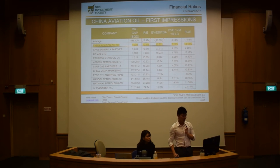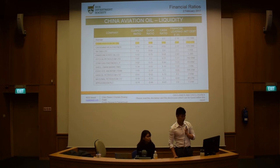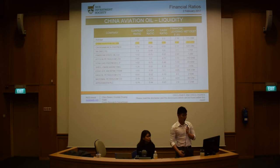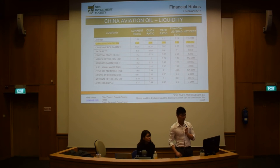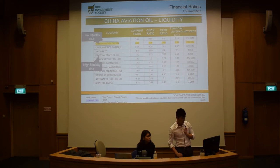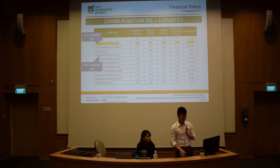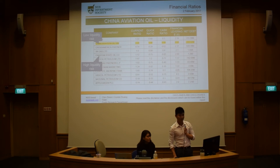Let's say you look at PE and EV/EBITDA and think this looks undervalued. The next step is to look at liquidity — current ratios and quick ratios. Looking at China Aviation Oil versus the average, it's quite safe. Its current ratio is above one, which means it doesn't really have any solvency risk, so it's quite a safe investment with low liquidity risk. As compared to a company like Pakistan State Oil, whose cash ratio is only 0.02 — its current cash versus current liabilities is very, very low — and its leverage is about three times, which might represent high liquidity risk.